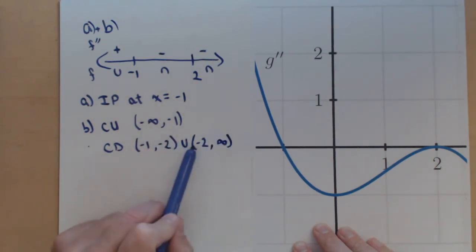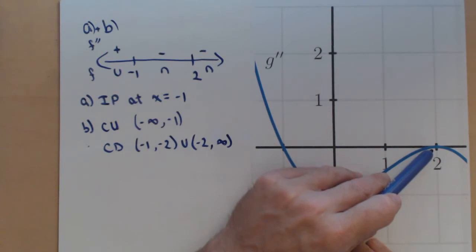The reason we exclude negative 2 is because it was a place where our second derivative was 0, so it's a place where the rate of change is not changing.